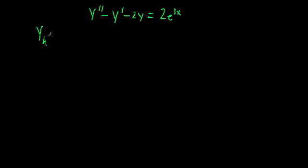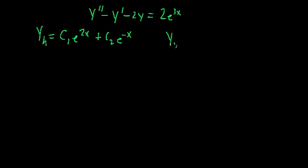From the last video — or we could re-derive it quickly — the homogeneous solution is c₁e^(2x) + c₂e^(-x). The next step is to guess a particular solution that mimics the non-homogeneous term. Since we have a constant times e^(3x), let's try some constant A times e^(3x).